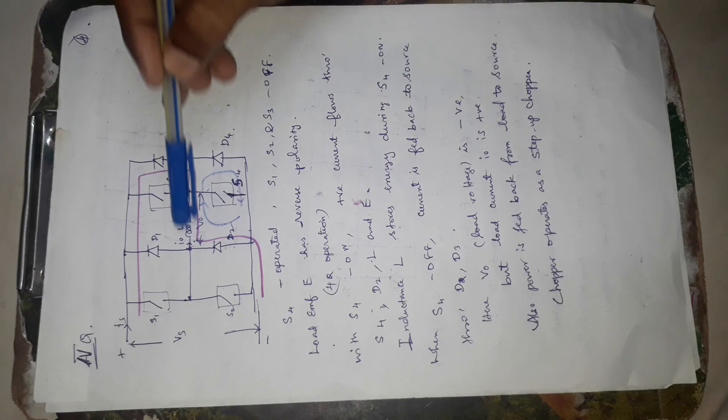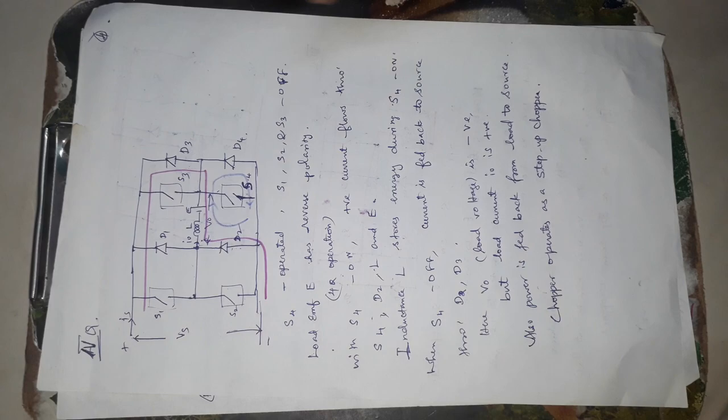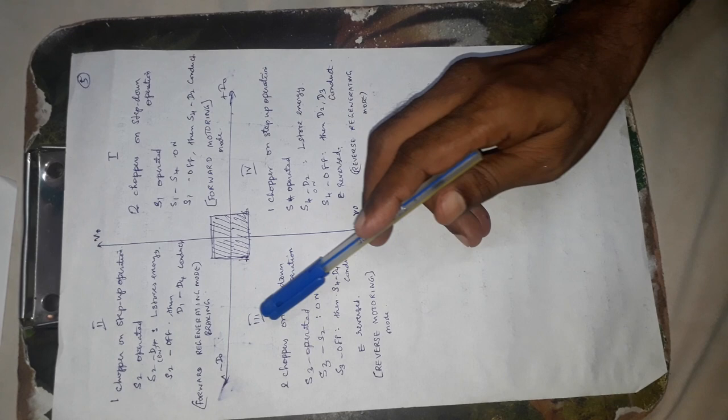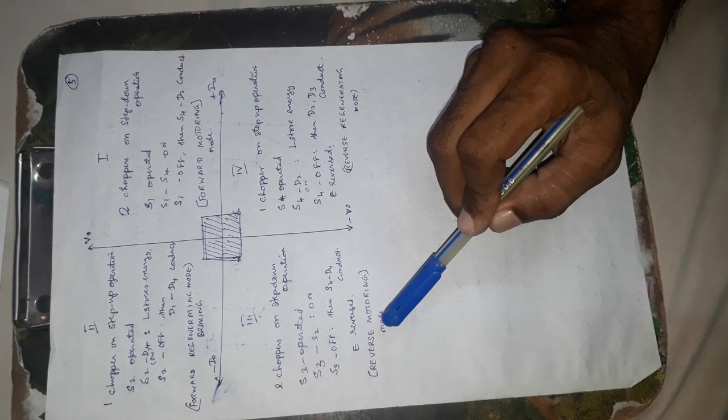This shows the four quadrant operation in a single diagram. The first quadrant is called forward motoring mode, the second quadrant is called forward regenerative braking mode, the third quadrant shows reverse motoring mode, and the fourth quadrant shows reverse regenerative mode. Dear students, if you have any doubts in this topic, please ask me. Thank you.